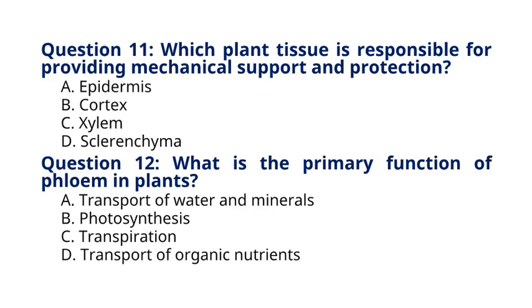Explanation: Phloem is the vascular tissue responsible for transporting organic nutrients, such as sugars and amino acids, from sources to sinks in plants.